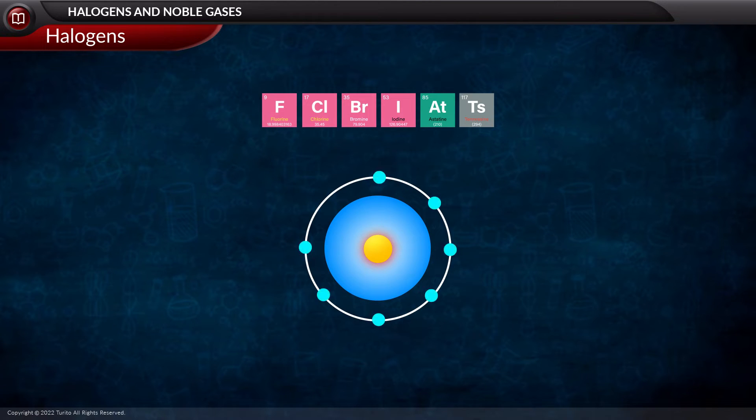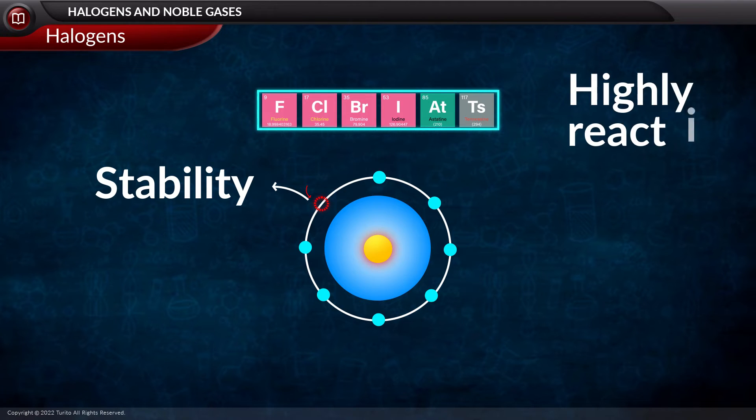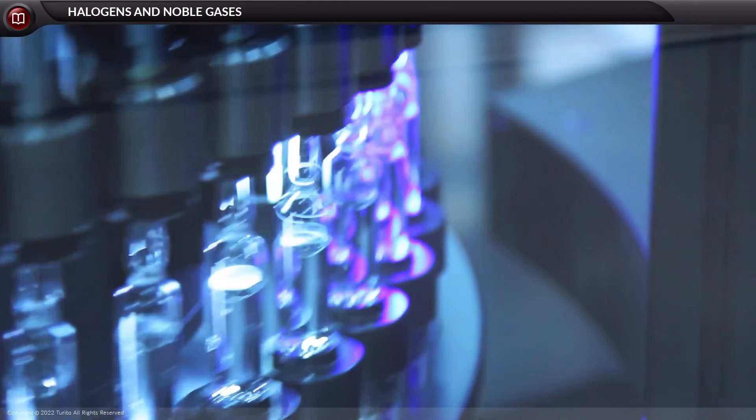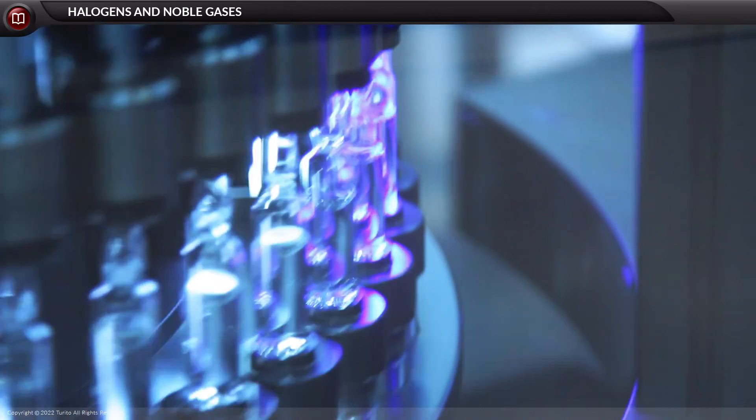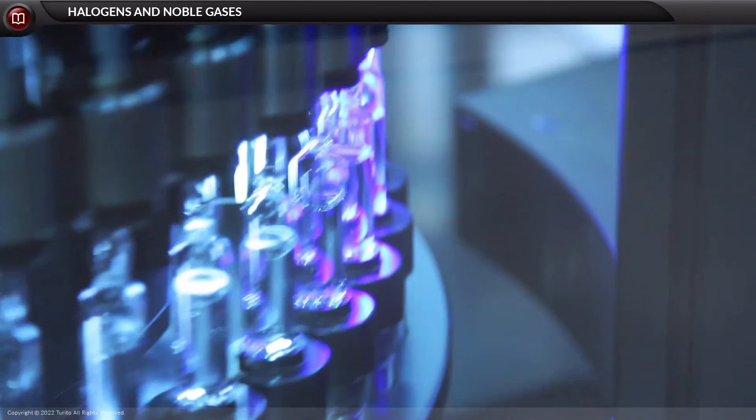Halogens have seven electrons in the outermost shell. Thus, if it gains one electron, it attains stability. That is why halogens are highly reactive. Have you observed a fascinating aspect that halogens are usually colorful?